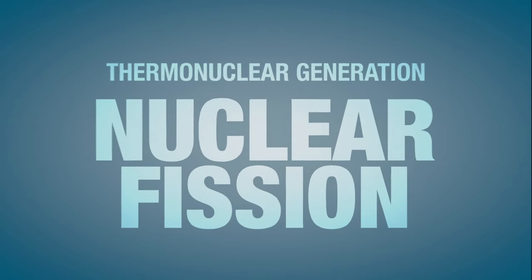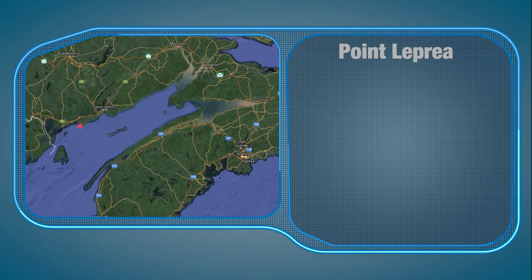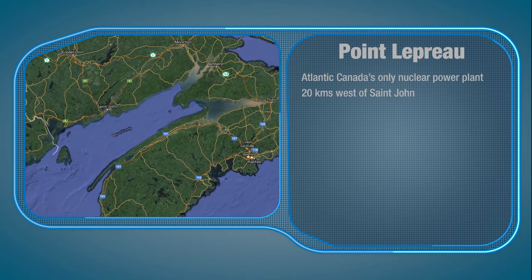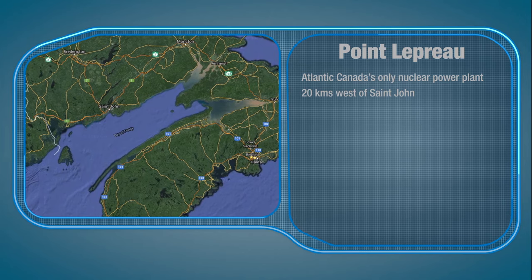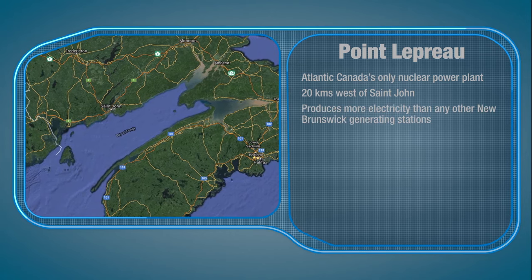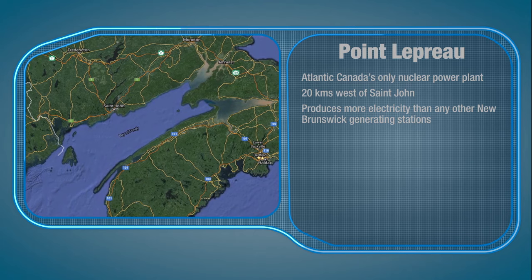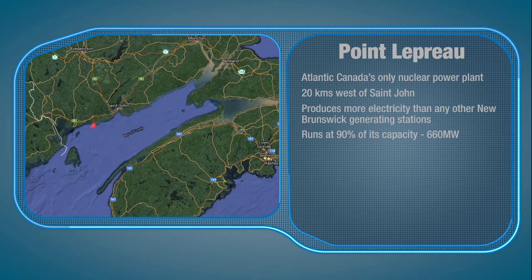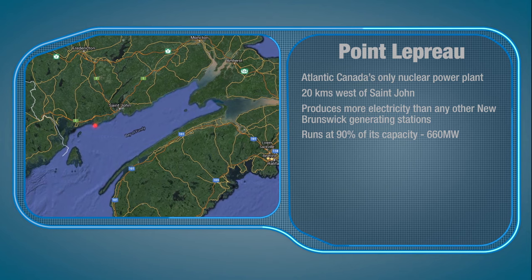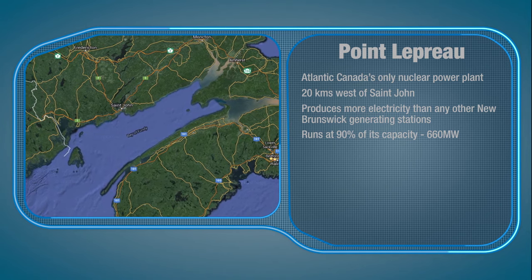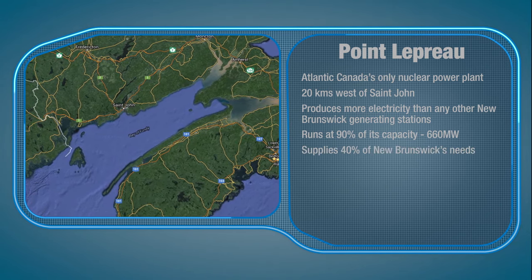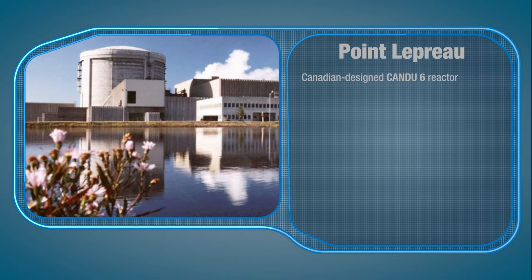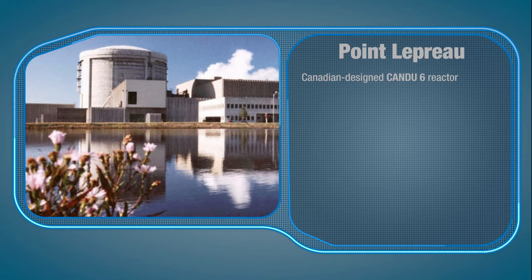Let's visit Atlantic Canada's only nuclear power plant at Point Lepreau, 20 kilometres west of St. John. Point Lepreau produces more electricity than any other of New Brunswick's generating stations. This is because it typically runs at 90% of its capacity, 660 megawatts, supplying 40% of New Brunswick's needs. Point Lepreau houses a single Canadian-designed CANDU-6 reactor.